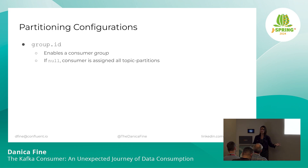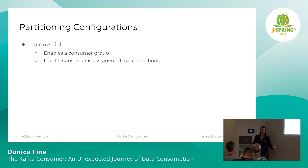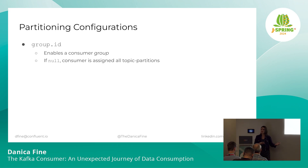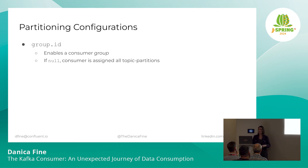With the group ID set, the consumer is also going to connect to the consumer group coordinator, which might be one of the brokers already connected to as part of the bootstrap servers, or it might be another separate broker running that process. If we leave group ID empty, we're going to assign a random group ID. When that consumer dies and comes back up, it's going to be spun up with another random string, so it won't be able to find what its offsets were previously. So it's oftentimes better to explicitly set your group ID, even if you do want to use just a single consumer.